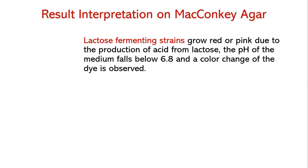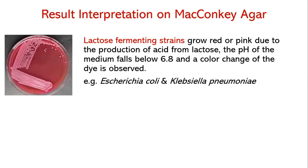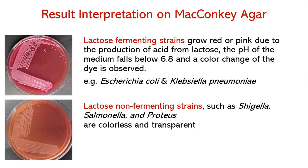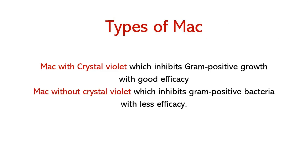Lactose-fermenting strains grow as red or pink colonies due to acid production from lactose metabolism, lowering the pH and causing a color change in the dye. Such strains include Escherichia coli and Klebsiella pneumoniae. Lactose-non-fermenting strains such as Shigella, Salmonella, and Proteus are colorless and transparent. There are two types of McConkey agar: one with crystal violet, which inhibits gram-positive growth with high efficacy, and one without, which inhibits with less efficacy.